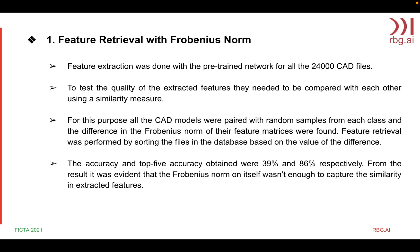To test the quality of the extracted features from the CAD models, they were compared with each other using a similarity measure. The CAD models were paired with random samples from each class and the difference in Frobenius norm of their feature matrices were found. Feature retrieval was performed based on this value. The accuracy and top-5 accuracy were 39% and 86%. From the result, it was concluded that the Frobenius norm itself wasn't enough to capture the similarity in extracted features.